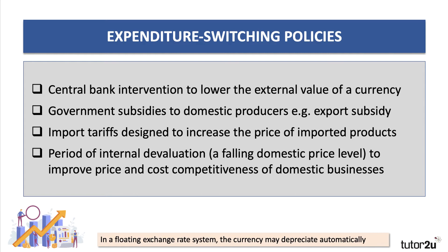A second policy — and perhaps you can visualize the diagram you might draw here — would be if the government was to offer a subsidy to domestic producers. It could be an export subsidy to encourage firms to sell overseas, or it could be a subsidy to domestic producers — farmers, manufacturers — designed to lower their costs. If you can visualize a subsidy diagram, then you're in great shape for the exam; include that in your answer.